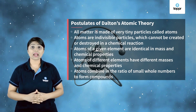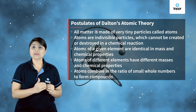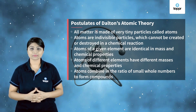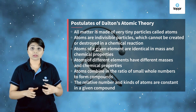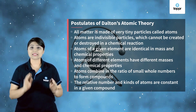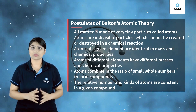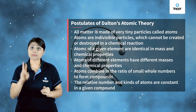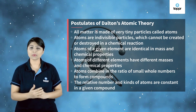For example, if we have hydrogen and oxygen, they combine in the fixed ratio of 1 to 8 by mass to form water. The last postulate says that the relative number and kinds of atoms in a given compound remains the same. For example, water is made up of hydrogen and oxygen, and every time two hydrogens will combine with one oxygen to form water.